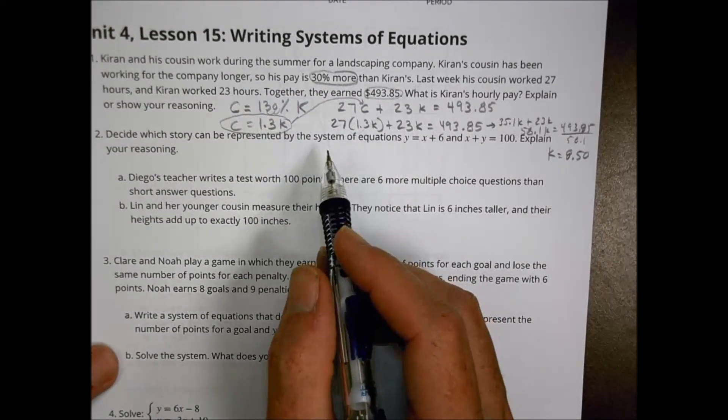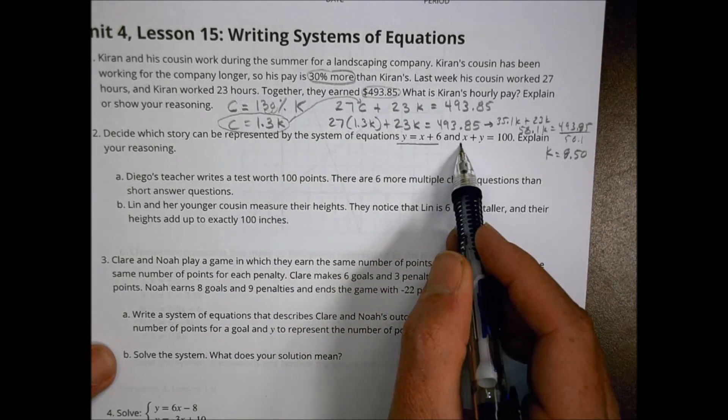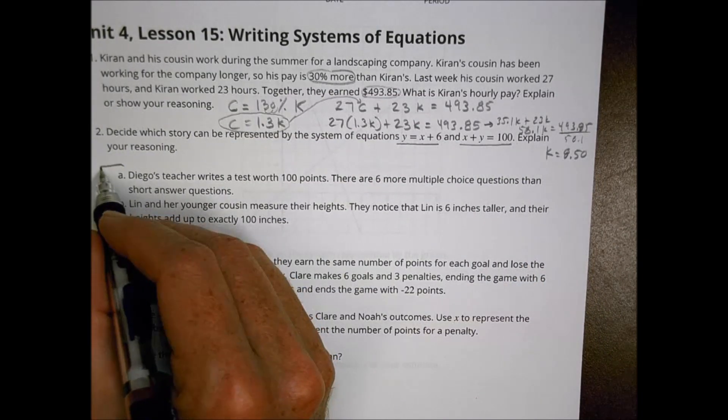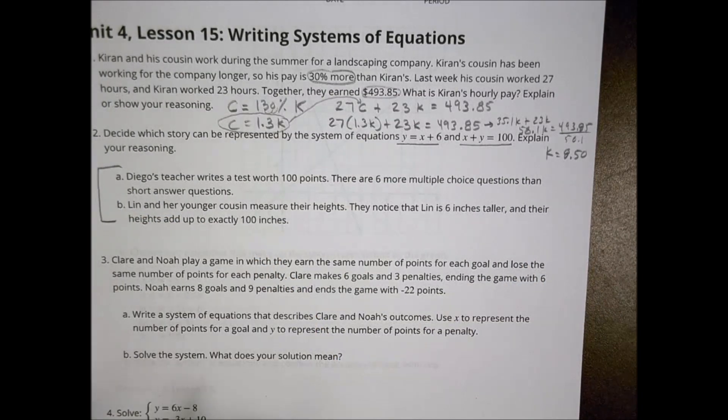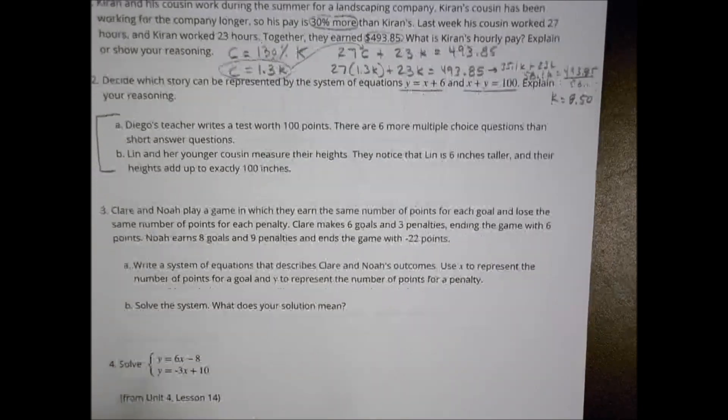Number two. Decide which story can be represented by the system of equations Y equals X plus 6 and X plus Y equals 100, and explain your reasoning. Because this is just a multiple choice A and B, I'm going to skip this one here and let you read through it and figure out what your solution is going to be.